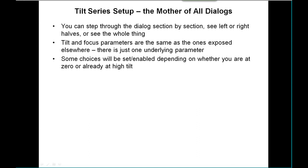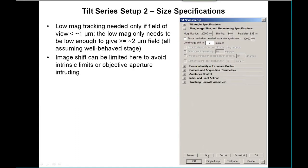The tilt series dialogue is huge, and you have choices about how you can look at it. You can look at the whole thing, the left or right sides, or step through it one section after another. Some of the parameters exposed there, particularly the tilt interval and the focus parameters, are the same as the ones you can see and set in other places — there's just one underlying parameter until you start setting up multiple tilt series. Depending on whether you're at zero tilt or high tilt when you open the dialogue, things will be enabled or disabled in intelligent ways.